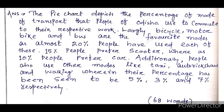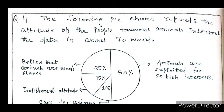Now let's go to the fourth number question. The fourth question is also regarding pie charts. The following pie chart reflects the attitude of the people towards animals. Interpret the data in about 70 words.